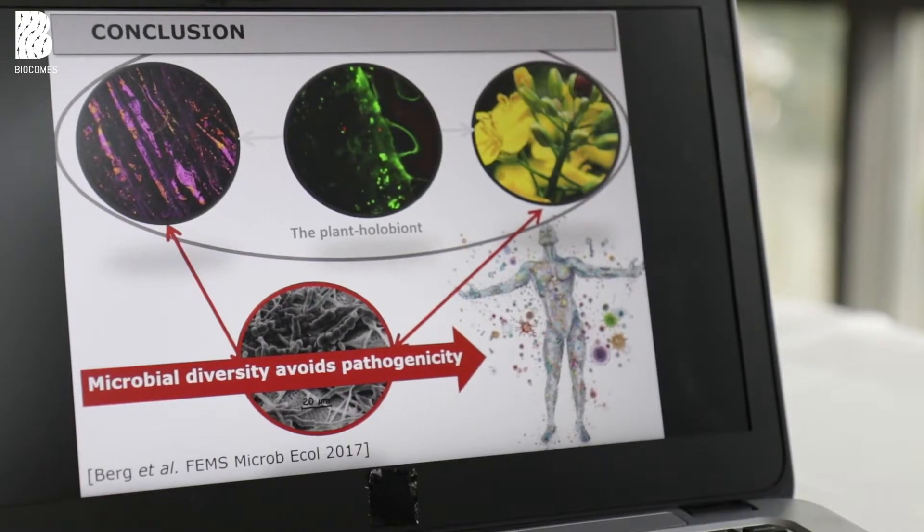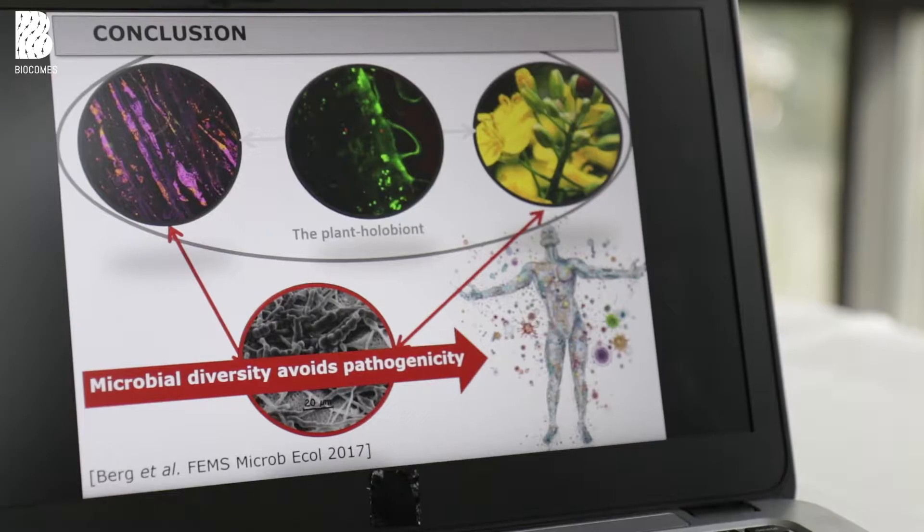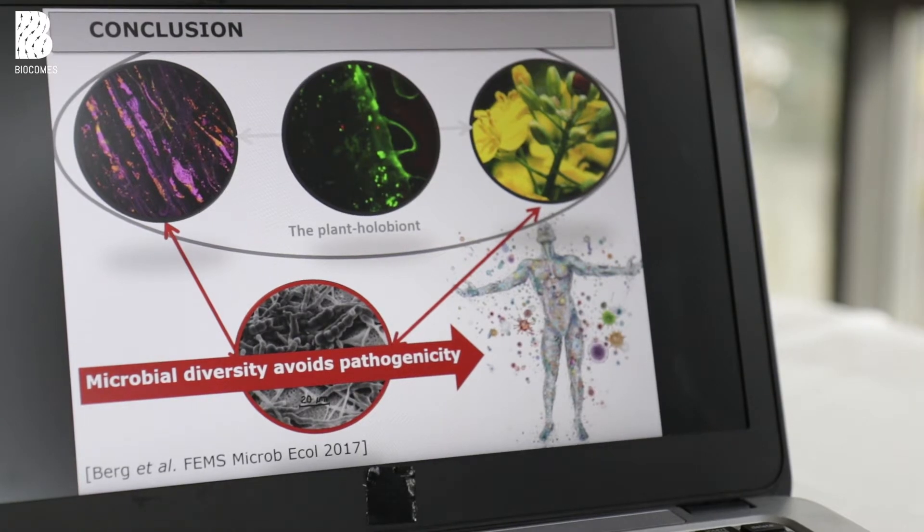Now I come to the conclusions from our research. The first conclusion is that when we look at a plant or a crop, we have to think of it as a meta-organism — it is not only the plant itself. There are millions of microorganisms living inside and outside of the plant, and together they form a holobiont. They interact with each other and fulfill many functions together, which is very important for all agricultural purposes.